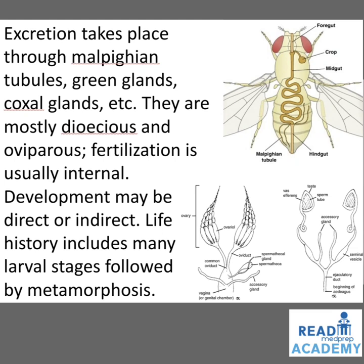Arthropods are mostly dioecious and oviparous. Fertilization is usually internal. Development may be direct or indirect. Life history includes many larval stages followed by metamorphosis. You can see the foregut, the crop, the midgut leading onto the hindgut which is the digestive system, and the Malpighian tubules connected to the hindgut which are the excretory organs.